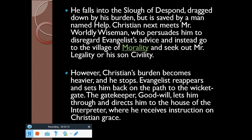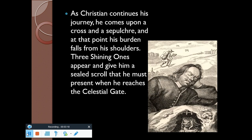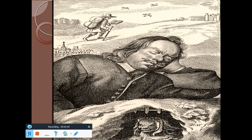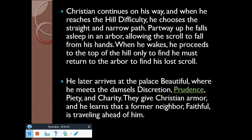The gatekeeper Goodwill lets him through and directs him to the house of the Interpreter, where he receives instruction on Christian grace. As Christian continues his journey, he comes upon a cross and a sepulcher, and at that point his burden falls from his shoulders. Three shining ones appear and give him a sealed scroll that he must present when he reaches the Celestial Gate.